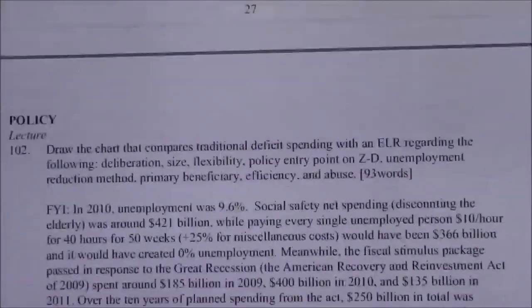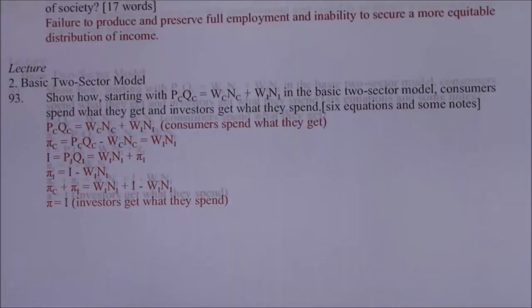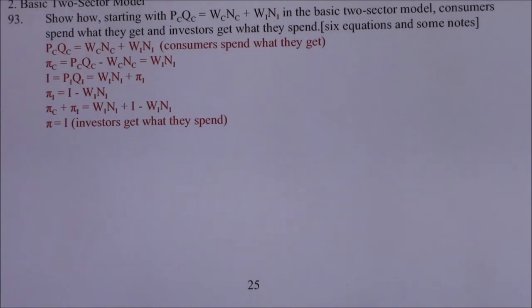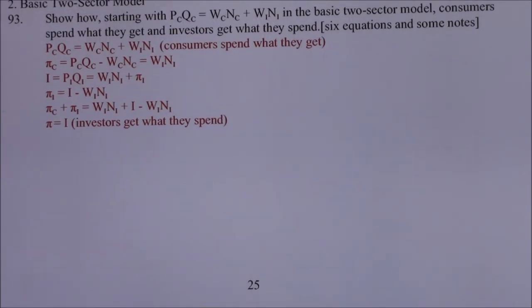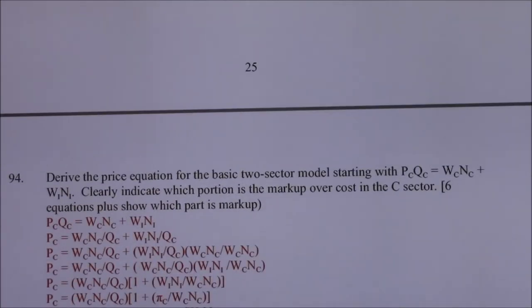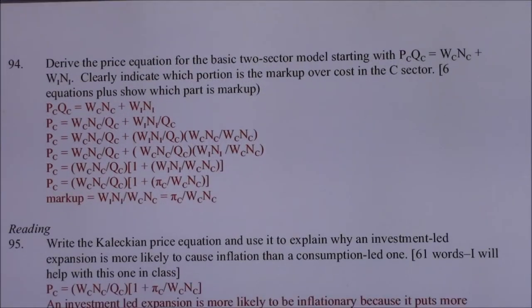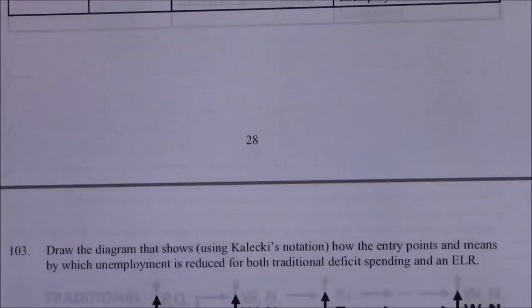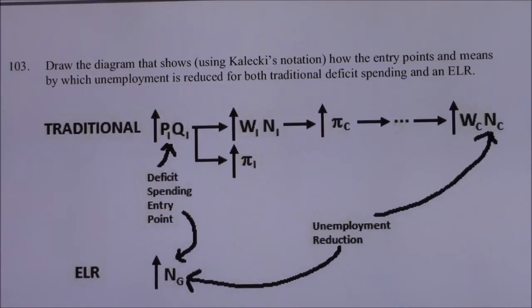With all of this stuff — those equations here, which we did in another video — and then here deriving the price equation, I told you that the whole point was for her to develop a model with which she could examine the impact of deficit spending on the unemployed: is it getting to the people who most need the money? And so it got a little bit complicated at that point, the article did, so I thought I would just sort of simplify it with this diagram right here and show you the difference.